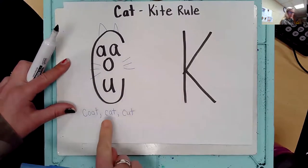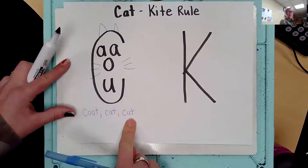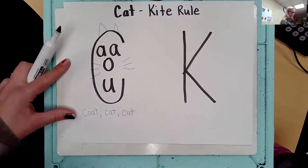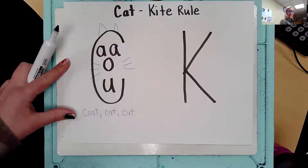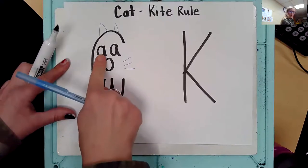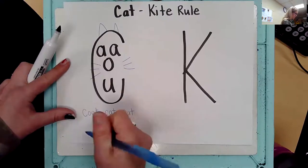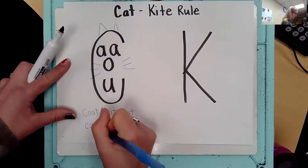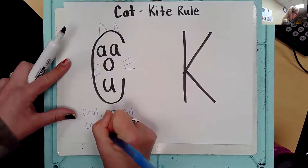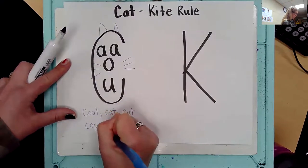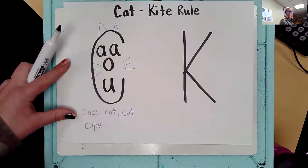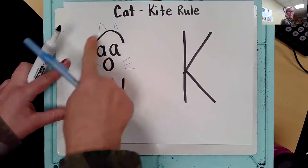Coat, cat, cut. We could also have a long A sound like the word 'cape' — C-A-P-E — long A. So we're going to use the letter C because we have the A sound, so it's the C.